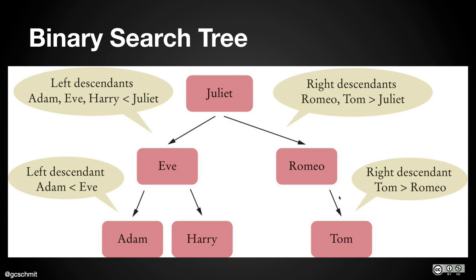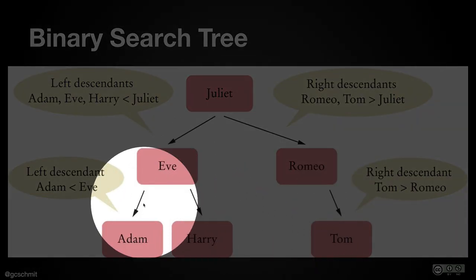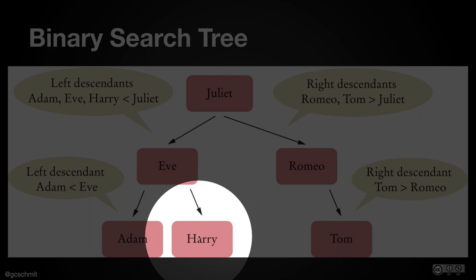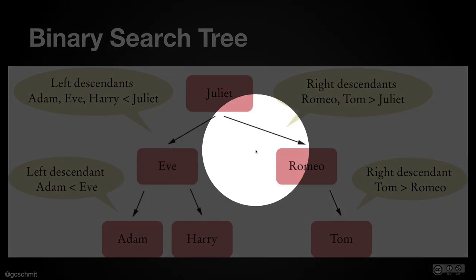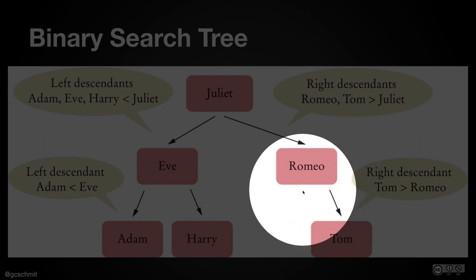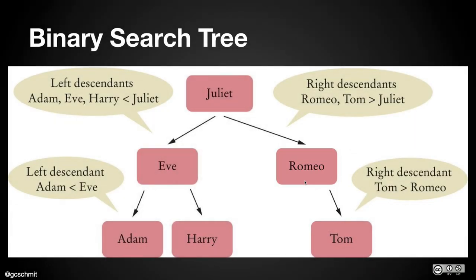It's not just the root — this rule keeps going. Everything in the left descendants of Eve comes before Eve, like Adam, and all the right descendants of Eve come after Eve, like Harry. Same with Romeo: there are no left descendants, so nothing comes before Romeo, but Tom is the right descendant and does come after Romeo. We could rearrange these nodes and still preserve the rule that all left descendants come before the node and all right descendants come after it.